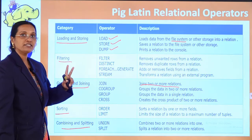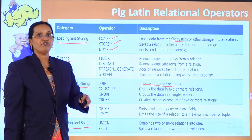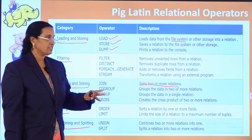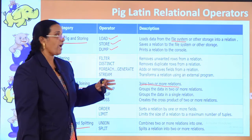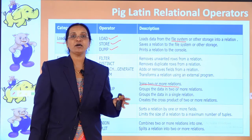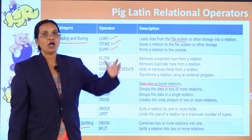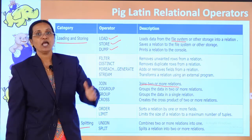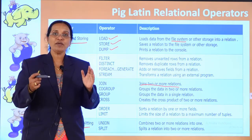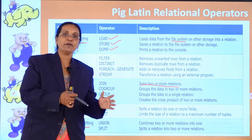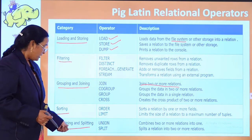In the sorting category, we have ORDER and LIMIT. ORDER sorts a relation by one or more fields in ascending or descending order. LIMIT limits the size of a relation to a maximum number of tuples — for example, if you have 100 tuples but want to see only 10 or 3, you use the LIMIT operator.